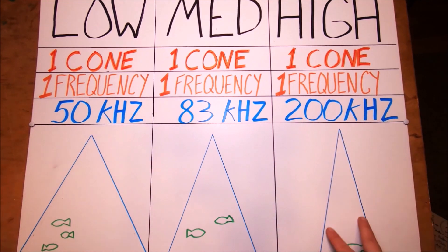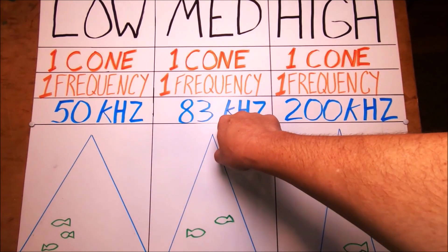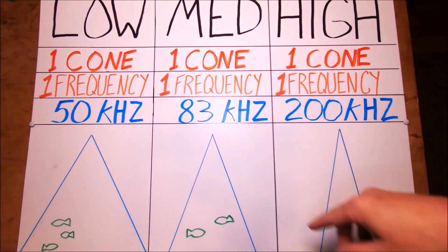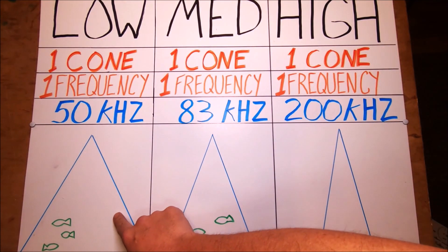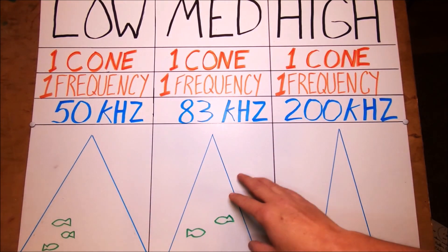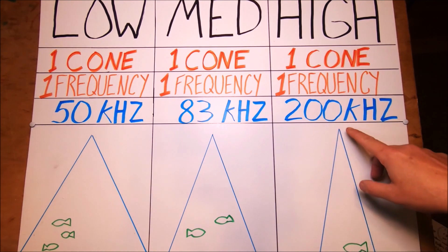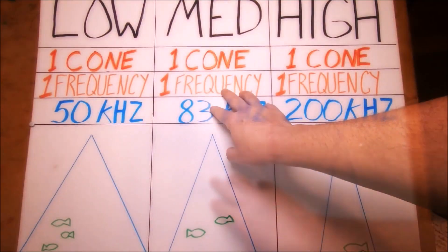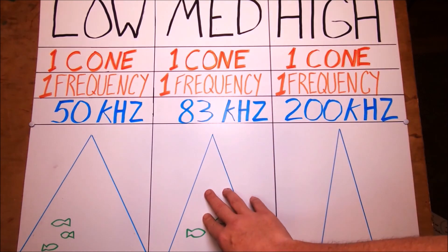You have one cone size, one frequency. Lower frequency is typically a wider cone, medium is in the middle, and your high frequency is a narrower cone. Your transducer shoots a ping down, it hits the target, comes back, tells you where the target is and shows what it looks like.